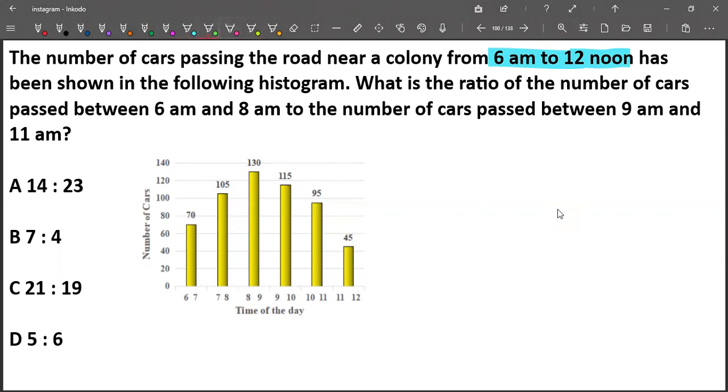What is the ratio of - from here the question starts - the ratio of the number of cars passing between 6am and 8am to the number of cars passing between 9am and 11am. So from 6am to 12 noon, out of which 6am to 8am.